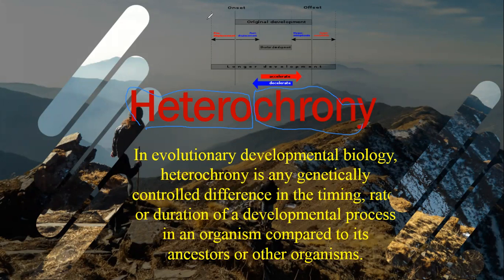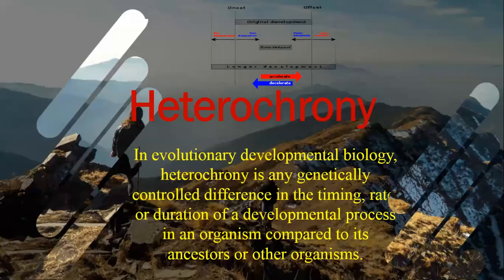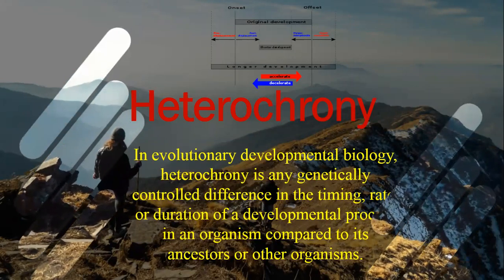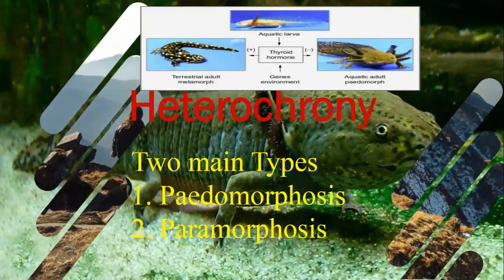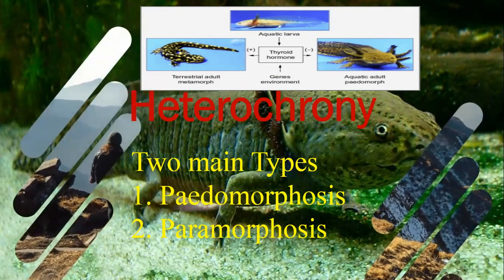In terms of evolution, the term is used to explain the developmental rates, which can be intraspecific or interspecific. If an organism's evolutionary developmental rate differs with respect to its ancestors, we call it heterochrony. The two types we will discuss are pedomorphosis and peramorphosis.